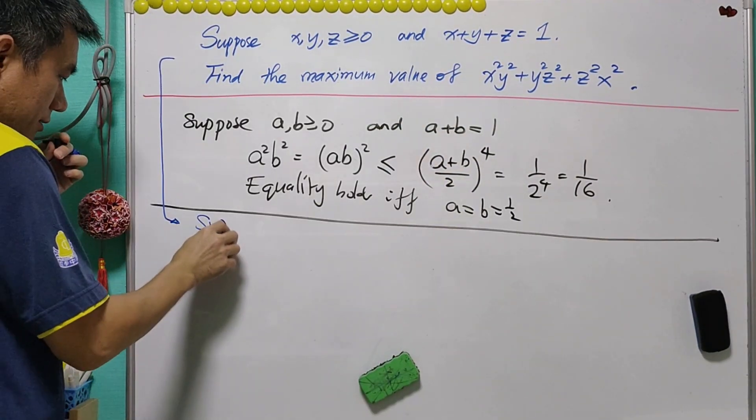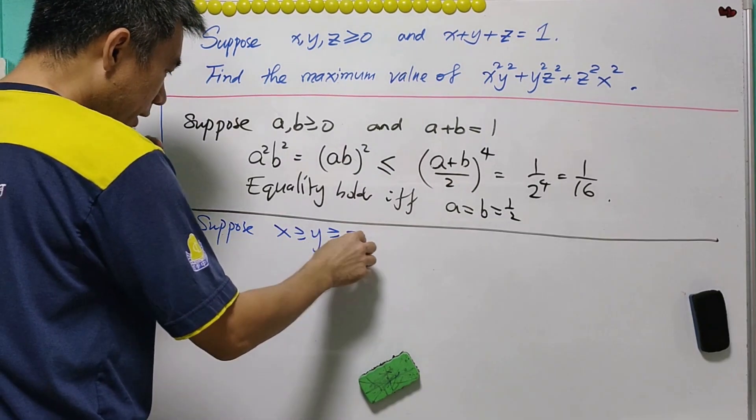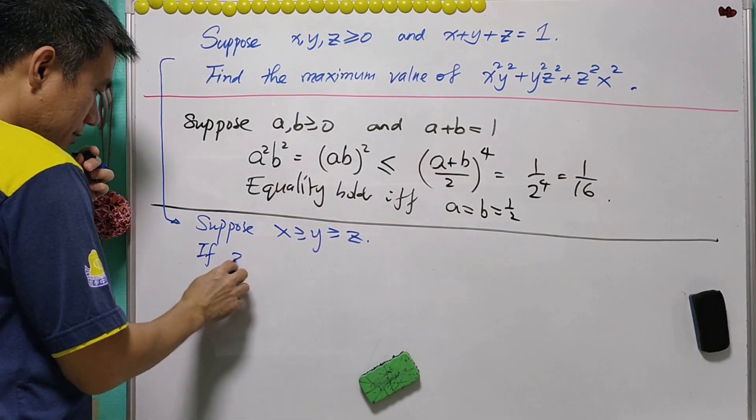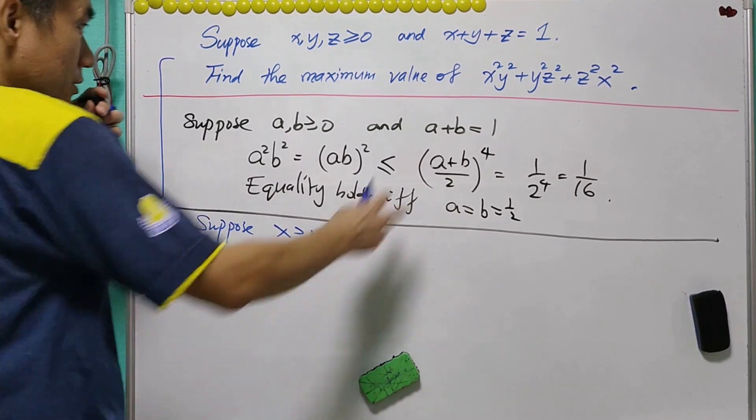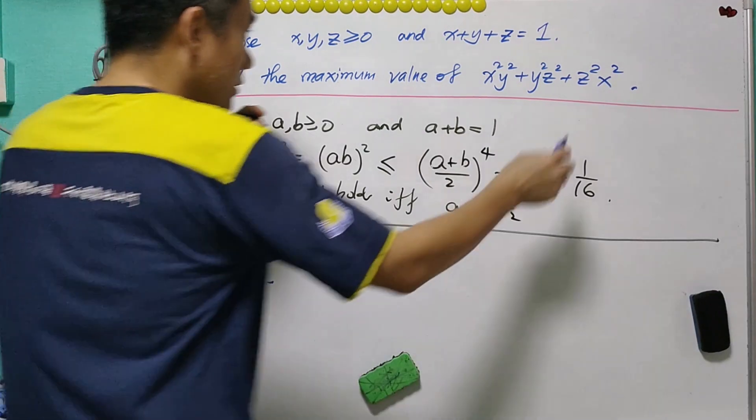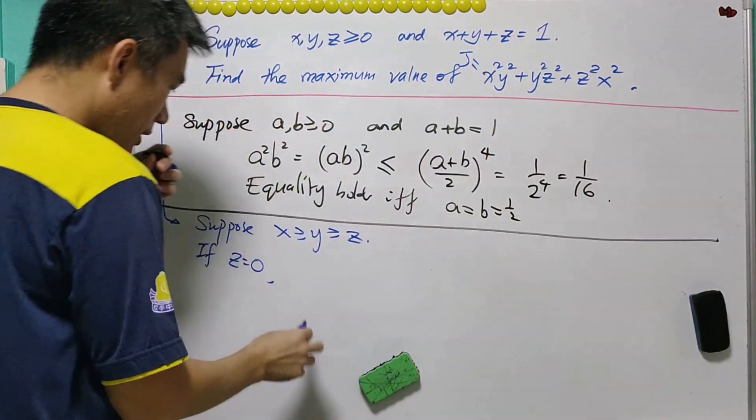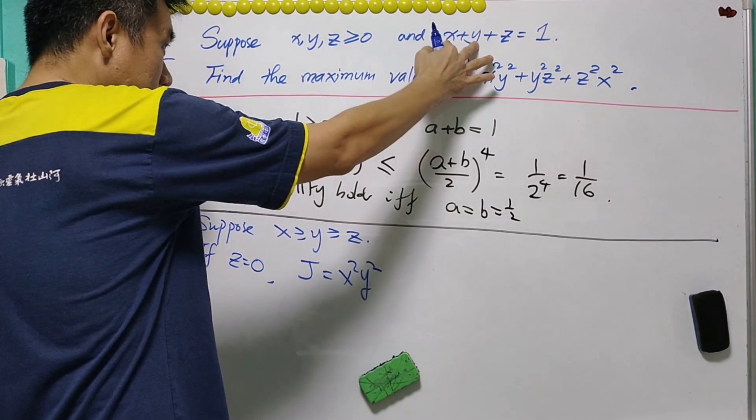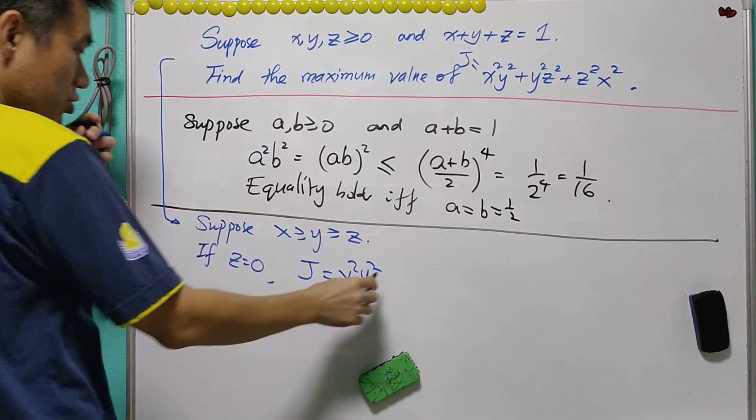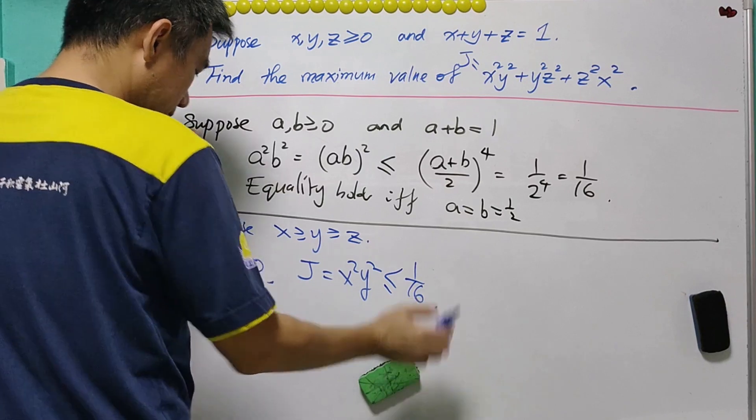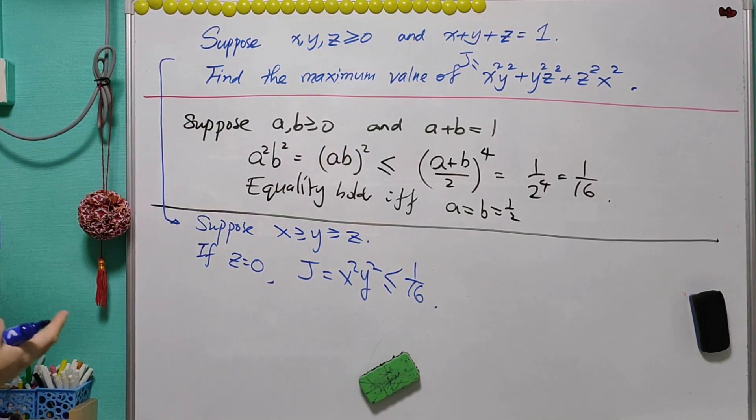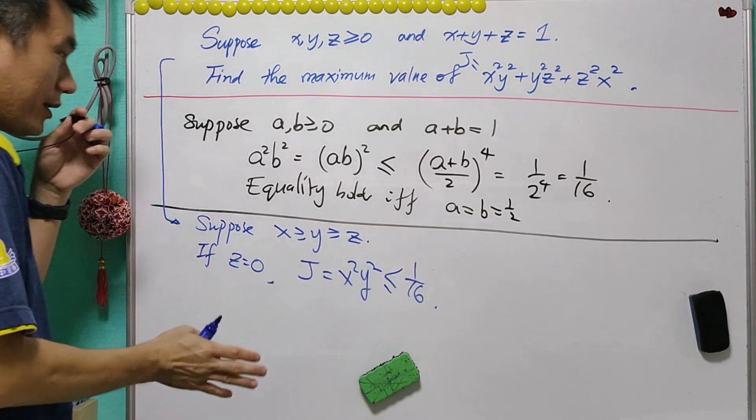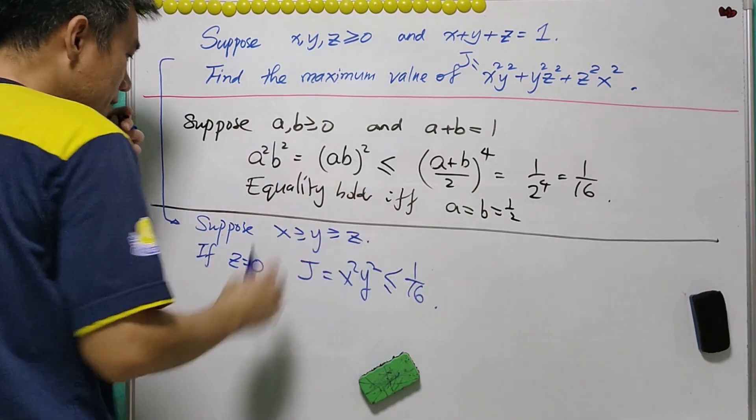Suppose we let x is greatest and y is smallest. Now, if z is equal to 0, then whatever that we have, call this j. This j will be just equal to x squared, y squared. And the sum of x and y will be equal to 1. From what we have, this will be less than or equal to 1 over 16. So from here we know that if z is equal to 0, j is not more than 1 over 16. It means that the maximum of j is at least 1 over 16.